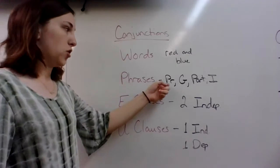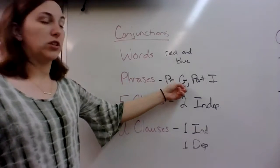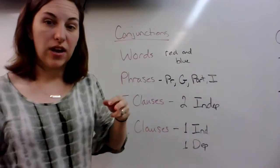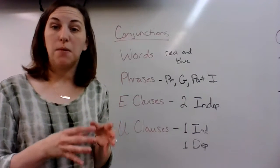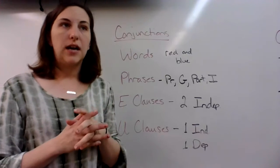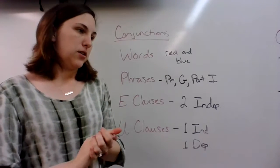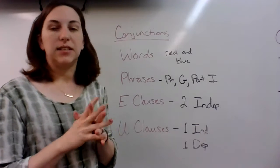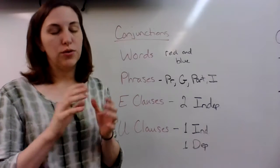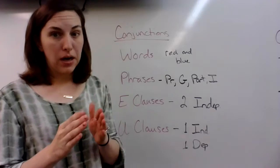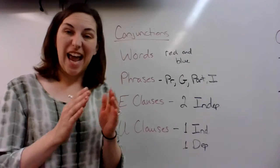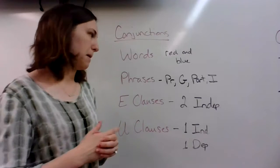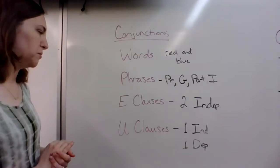Phrases, like your prepositional phrases, your gerund phrases, participle phrases, and infinitive phrases. A conjunction can just simply come between those group of words. To eat cake or to eat some pie. Two infinitive phrases. On the bus and in the house. Two prepositional phrases, so it can join them, comes between them.